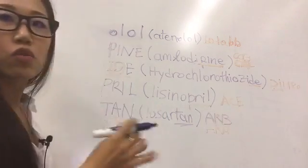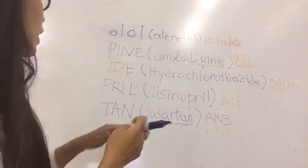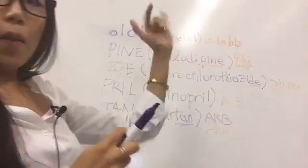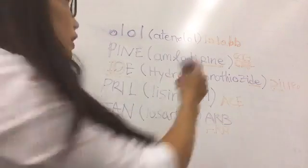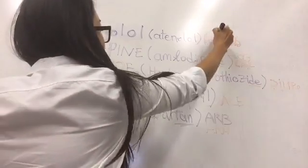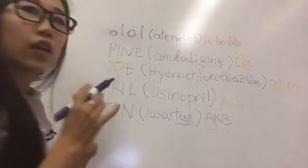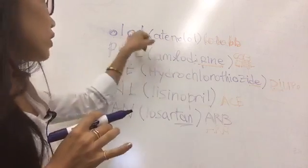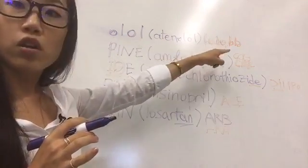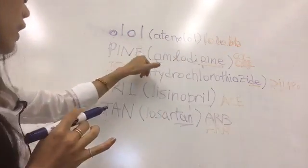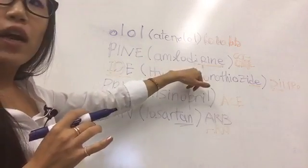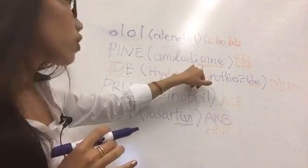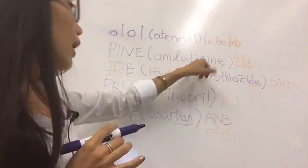Let me just recap really quickly. O-L-O-L, you write it opposite like you are in the mirror and it's going to give you L-O-L-O. If you put those two together, that's going to be a B and a B. Drugs that end with this are beta blockers. P-I-N-E, like this drug, how do I know this is a calcium channel blocker?